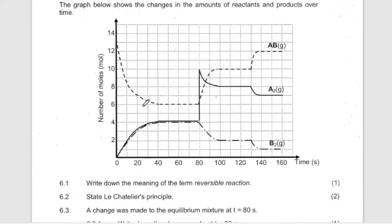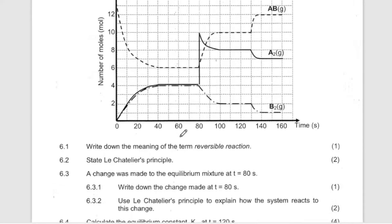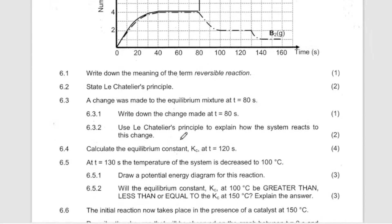They are asking: write down the meaning of a reversible reaction. A reversible reaction means reactants can be converted to products, and products can be converted back to reactants. So the reactants and products can be interconverted. Next, state Le Chatelier's Principle.